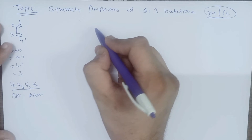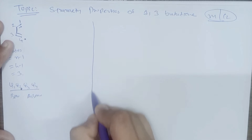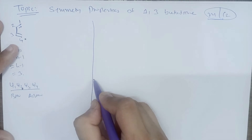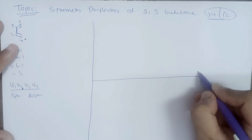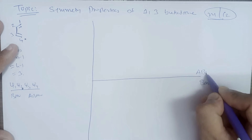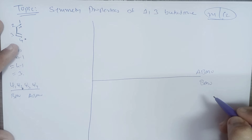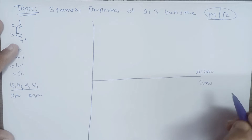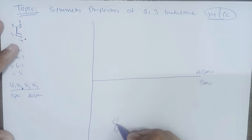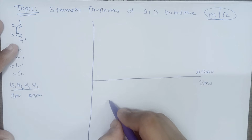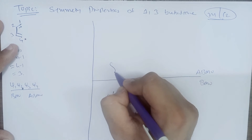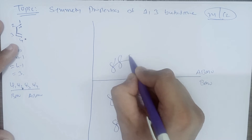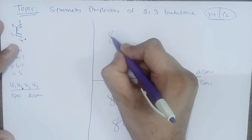Now let us draw the structure of 1,3-butadiene using the molecular orbital diagram. Here we are having a BMO that is bonding molecular orbital, and an ABMO that is anti-bonding molecular orbital. So now let us start by drawing 1,3-butadiene with carbons 1, 2, 3, and 4.